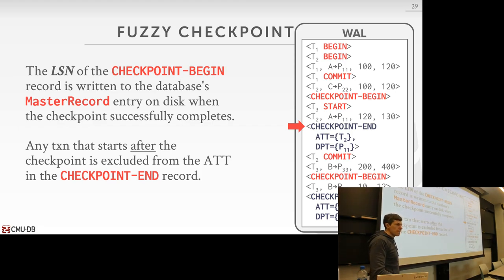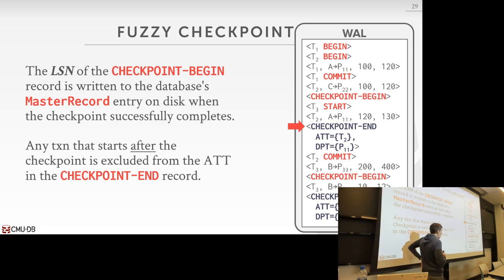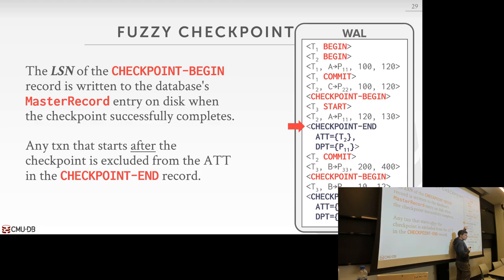Question: where do you keep the checkpoint end? It goes in the log. When does it end? When you have scanned through the buffer pool and written out all the dirty pages to disk. After you flush them out, you fsync to make sure it's durable. Then you add the log entry for checkpoint end, and like a regular transaction, you flush the log record for this to disk.